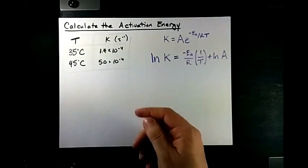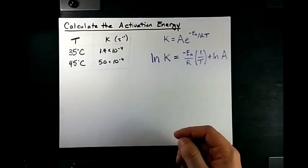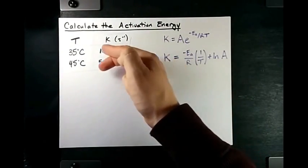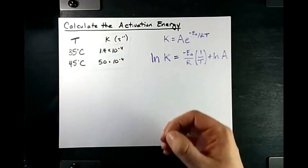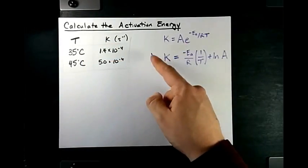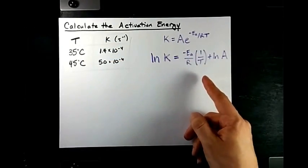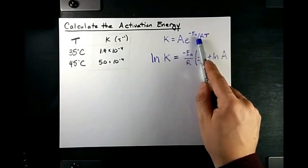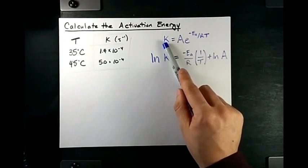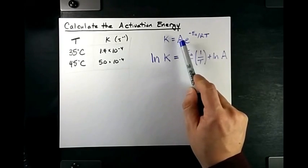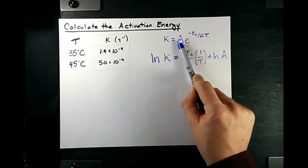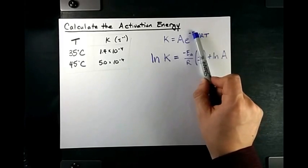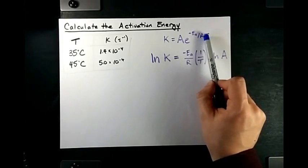Can you calculate the activation energy of a reaction given two rate constants at two different temperatures? Yes, you can using the Arrhenius equation and what you know about its graphs. This first line is the Arrhenius equation. The rate constant is the product of the Arrhenius constant, which is unique to each reaction, times e to the negative EA over RT, activation energy, gas constant, and temperature.